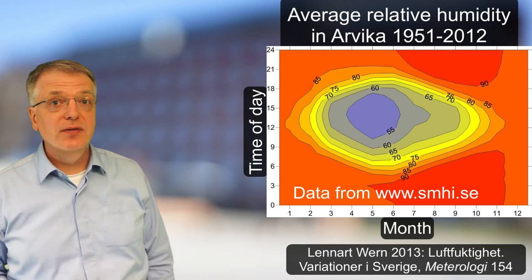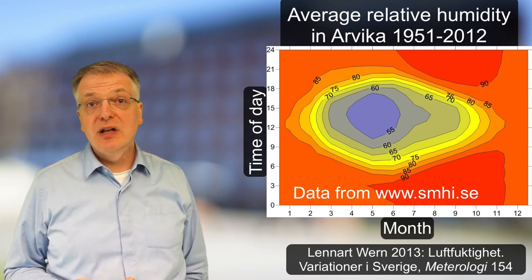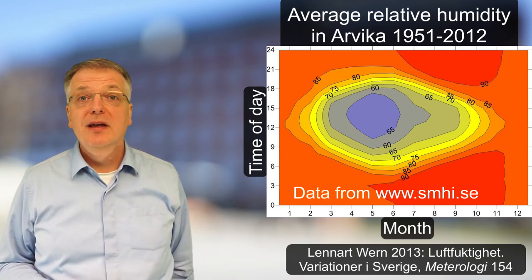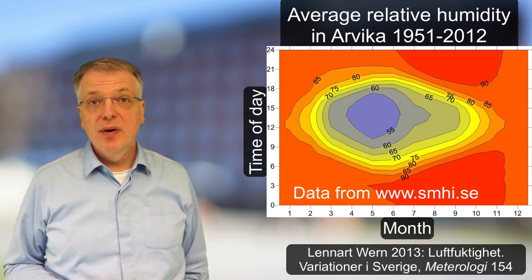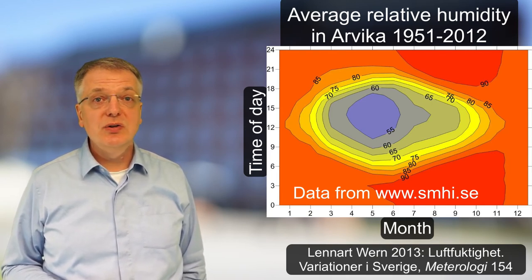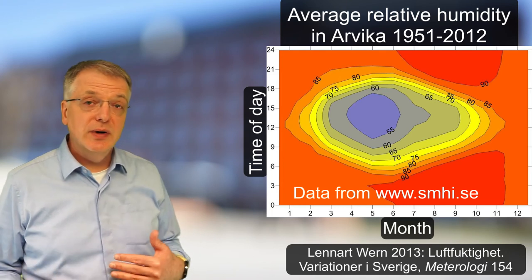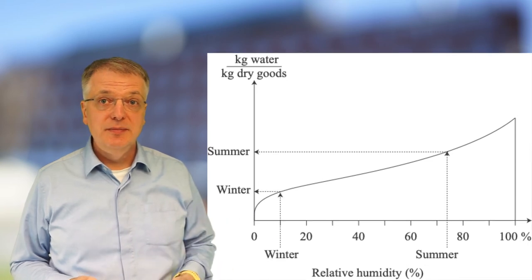This graph shows the average relative humidity for the Swedish town Arvika, from the website of the Swedish Meteorological and Hydrological Institute. For indoor air in Sweden, the relative humidity is typically higher in the summer and lower in the winter.